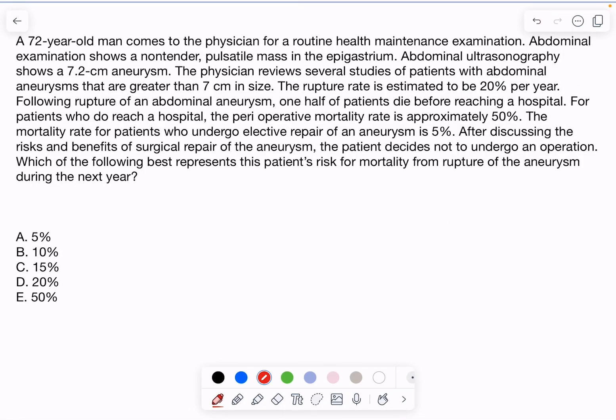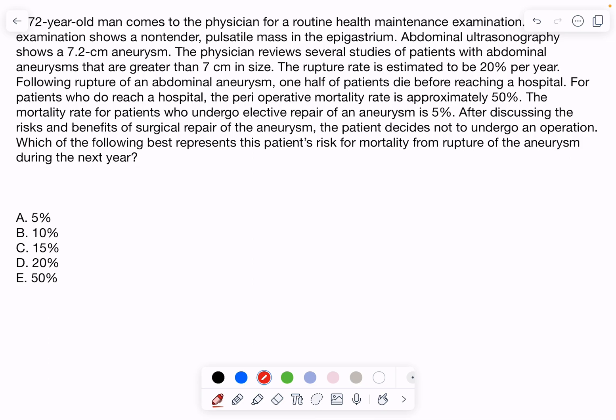So, a lot of people send me this question and they get it wrong because of the wording, which is really all over the place. So, in summary, this patient has an aneurysm that is greater than 7 centimeters.